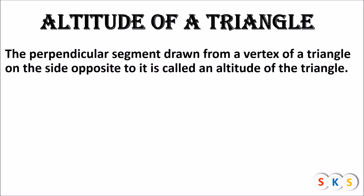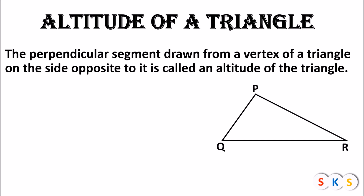We will try to understand this with the help of an example. Here I have taken a triangle PQR. It has three corners: corner P, corner Q, and corner R. Each corner of this triangle is known as a vertex. I have taken P as a vertex, and now I am going to make a perpendicular segment from vertex P to its opposite side QR.